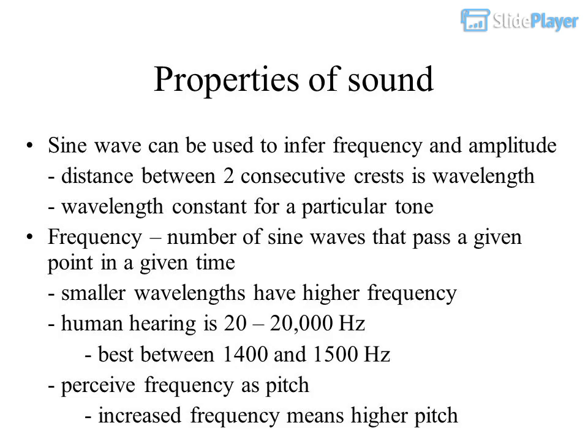A sine wave can be used to infer frequency and amplitude. The distance between two consecutive crests is the wavelength, which is constant for a particular tone. Frequency is the number of sine waves passing a given point in a given time; smaller wavelengths have higher frequency. Human hearing ranges from 20 to 20,000 Hz, and is best between 1,400 and 1,500 Hz. Frequency is perceived as pitch — increased frequency means higher pitch.